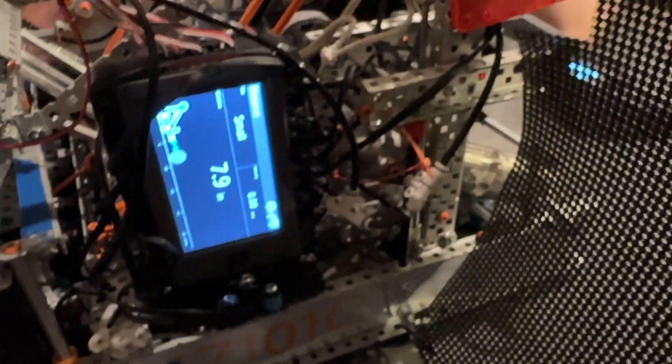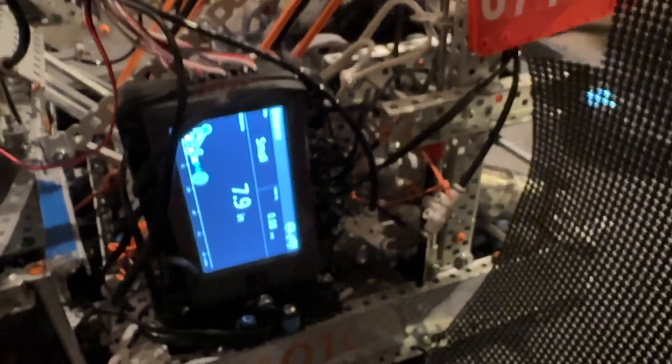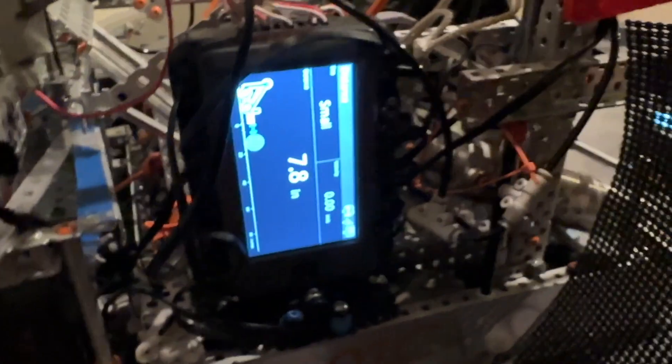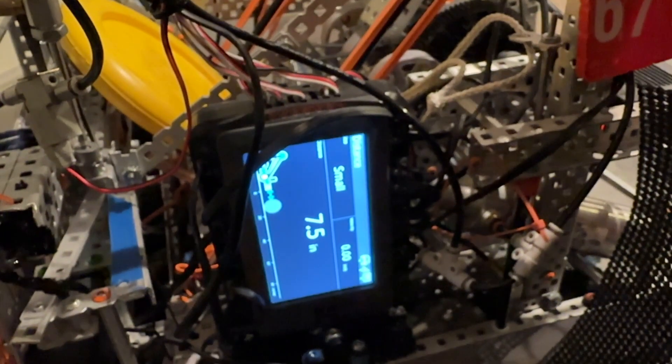It's reading like 7.8 inches, pretty consistent, usually within like 0.1 inches. When you put the first disc in it goes up to around 7.5, then second disc 6.6, third disc 5.8. So it knows how many discs are in there at a time.